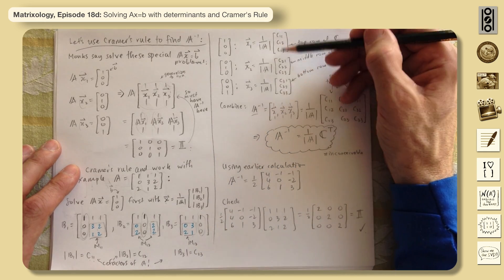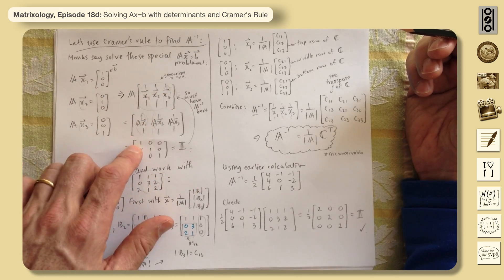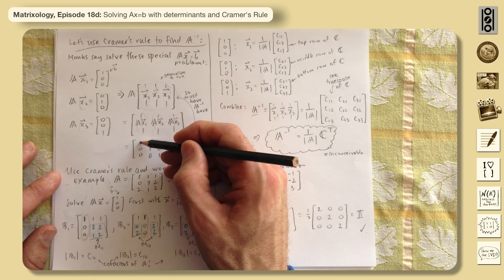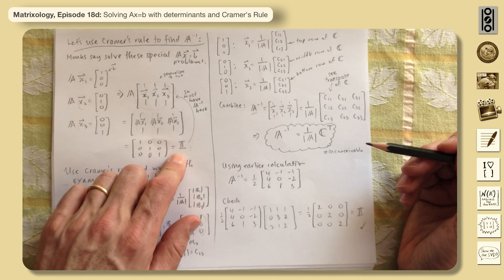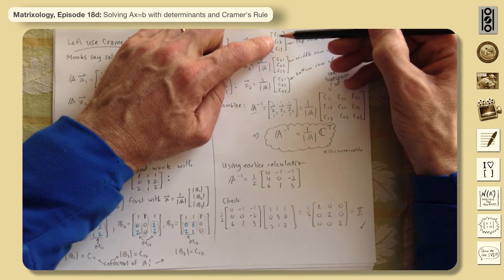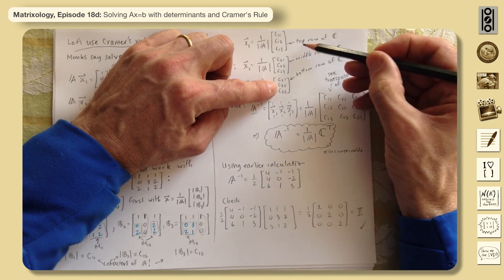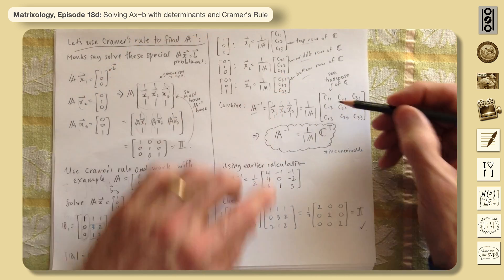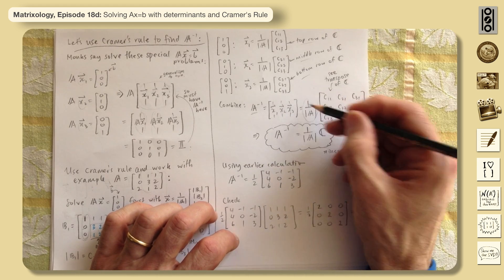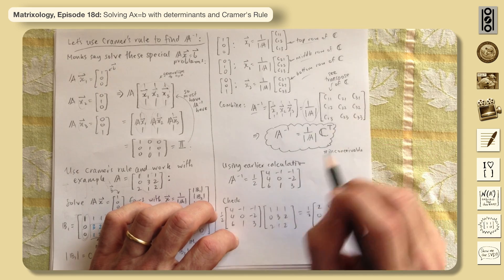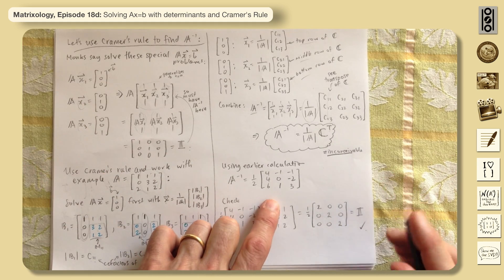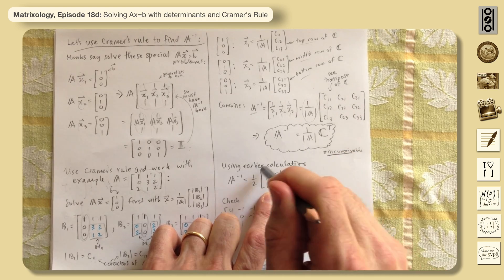Putting these solution columns together to form A inverse: each solution is a column of A inverse, but these are the rows of the cofactor matrix C. That means we have a transpose. So the inverse of A equals (1/det(A)) times the transpose of the cofactor matrix. That is remarkable — an actual closed-form formula for A inverse.